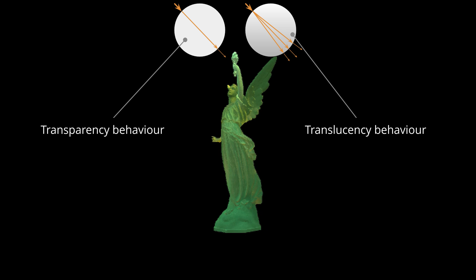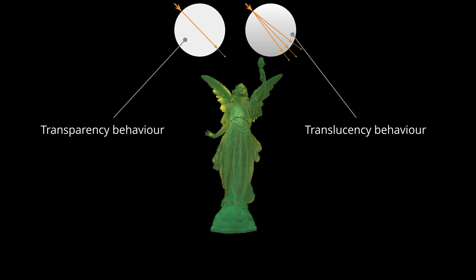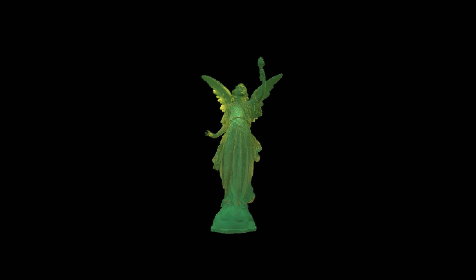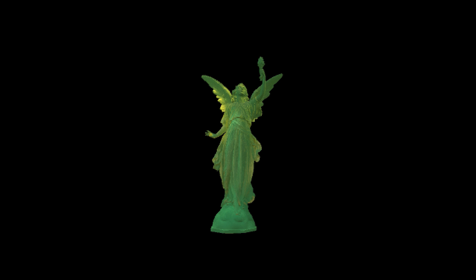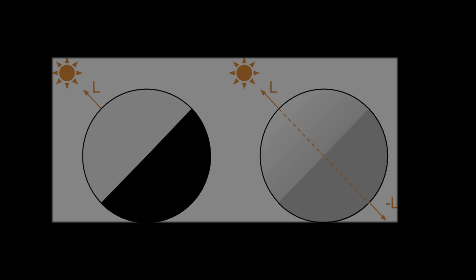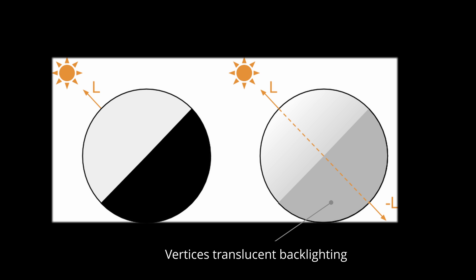We already described how subsurface scattering works, but now we want to find a way to implement it in a fast and efficient way, either mathematically and by coding it. The main idea is simple. In opaque materials, the light contributions come directly from their light source. The normal of the vertices that are inclined more than 90 degrees in respect to the direction of light L receive no light. However, with translucent materials, we have an additional light contribution that is related to minus L.